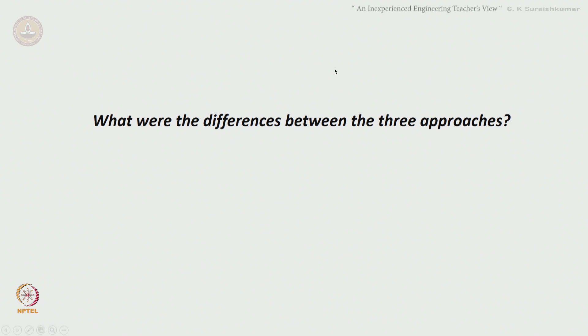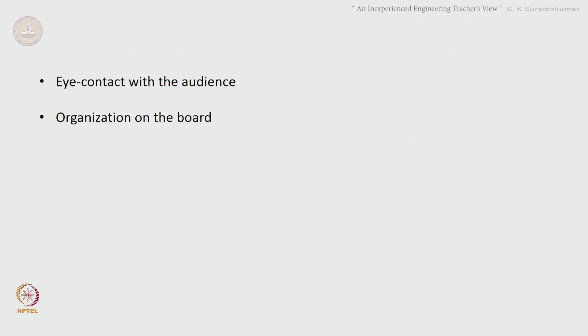I am sure you have found many differences. For example, in the very first approach, there was absolutely no eye contact made by the instructor with the audience. That is very important — it is one of the essential features of communication. The organization on the board was poor — the person wrote something here and then wrote something on top, and so on. The demeanor of the instructor was shifty, unsure, and nervous, which is very typical of a first-time or inexperienced instructor.